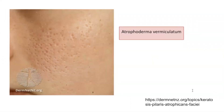The next variant is atrophoderma vermiculatum. This is a rare, progressive, benign follicular disorder that affects primarily children. It is characterized by the development of inflammatory keratotic papules of the face that form pitted, atrophic, and depressed scars in a reticular or honeycomb pattern, as seen here.